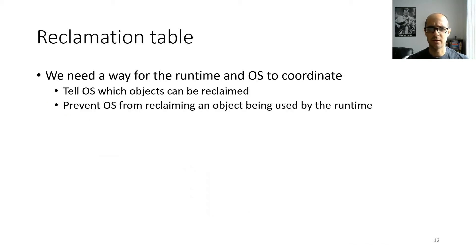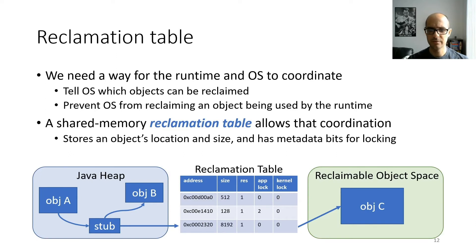We also need a way for the runtime and operating system to coordinate. The runtime needs to tell the OS which objects can be reclaimed, and also ensure the OS doesn't try to reclaim an object while the runtime is accessing it. For that, we use a shared memory reclamation table, which stores for every swappable object its location, size, and a set of metadata bits that the runtime and OS use for locking.